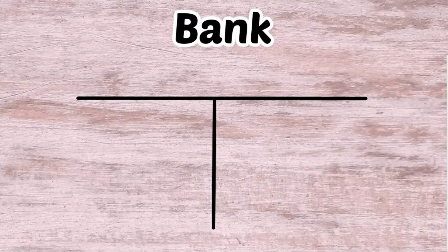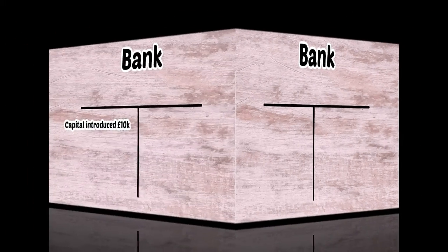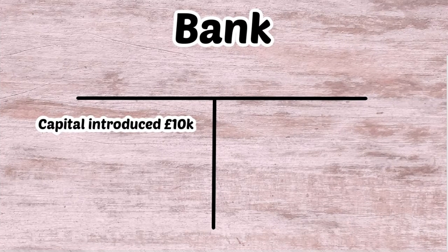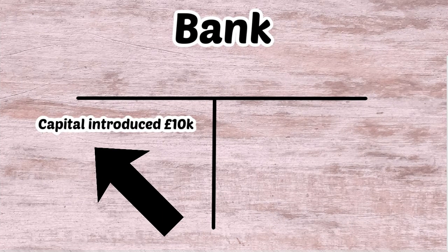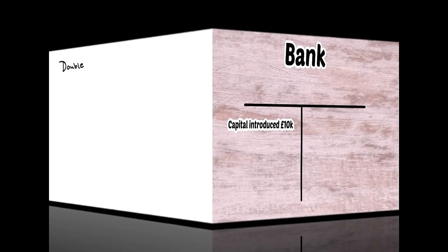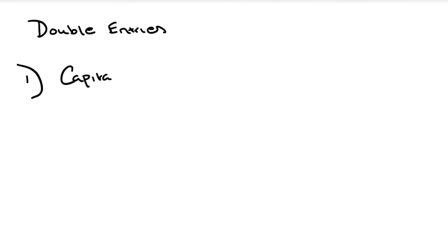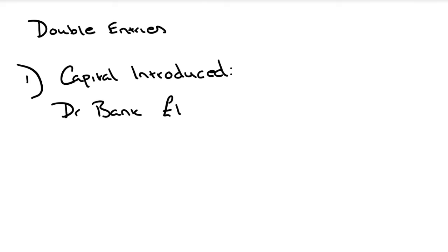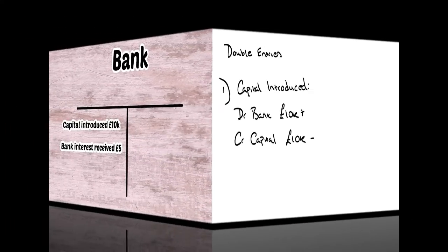Starting with an empty bank T account, we're going to introduce capital into a company. This is money introduced by the business owner from their own personal funds, and it's going to increase the bank balance by £10,000, so we debit the bank on the left hand side. The double entries are: debit bank £10,000 and credit capital account £10,000 — both items sit on the balance sheet or statement of financial position.